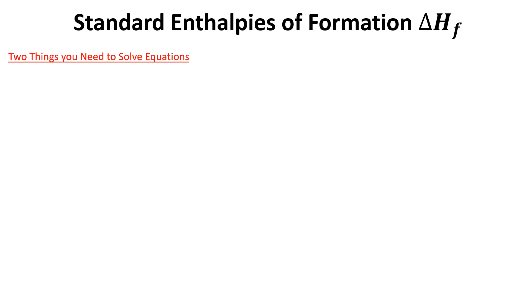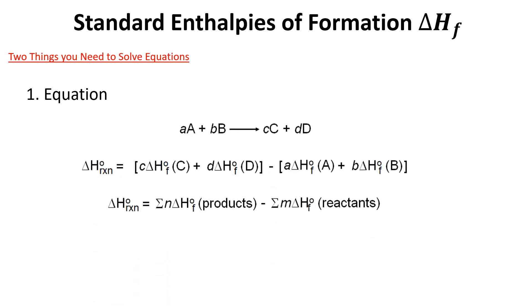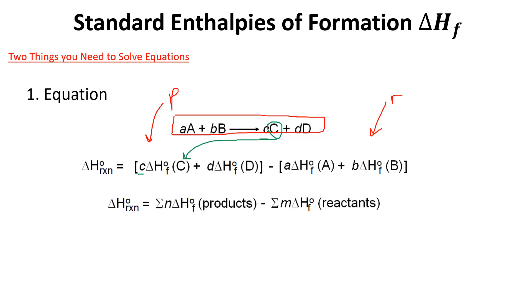Now we need the equation for calculating ΔH of reaction using formation values. Given a balanced equation, the formula is: ΔH_reaction = sum of (coefficients × ΔHf° of products) minus sum of (coefficients × ΔHf° of reactants). Each compound — as long as it's not a pure element — should have a value we can look up in a table.